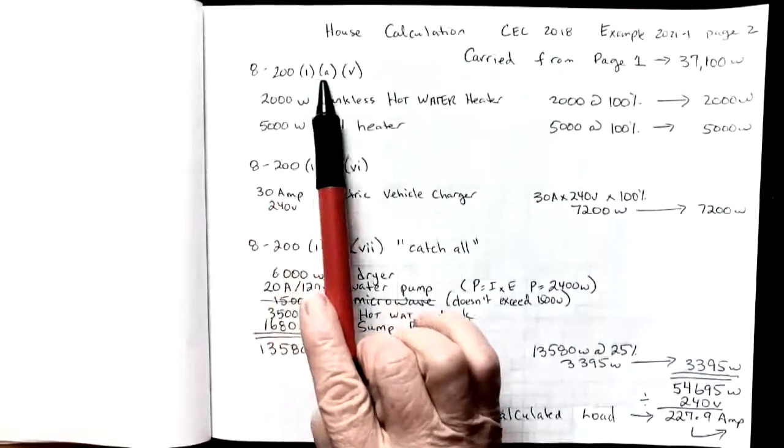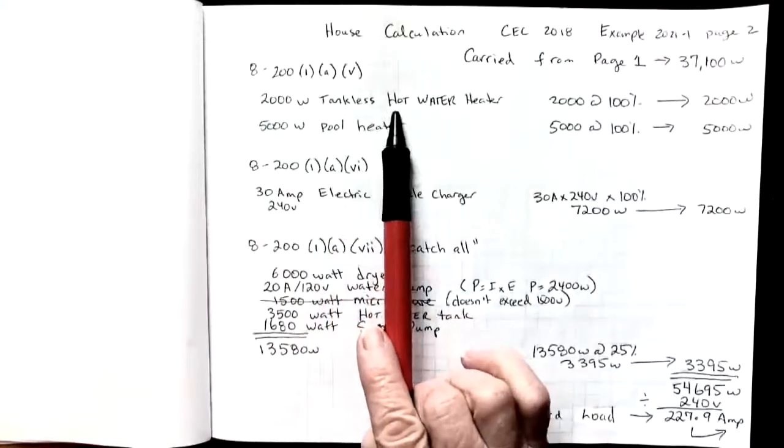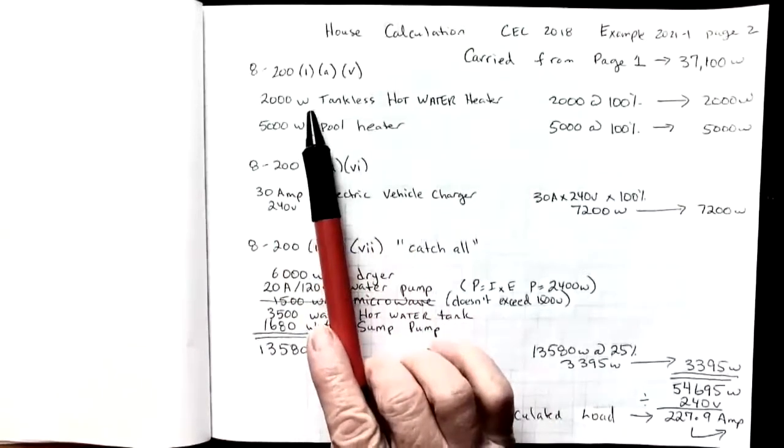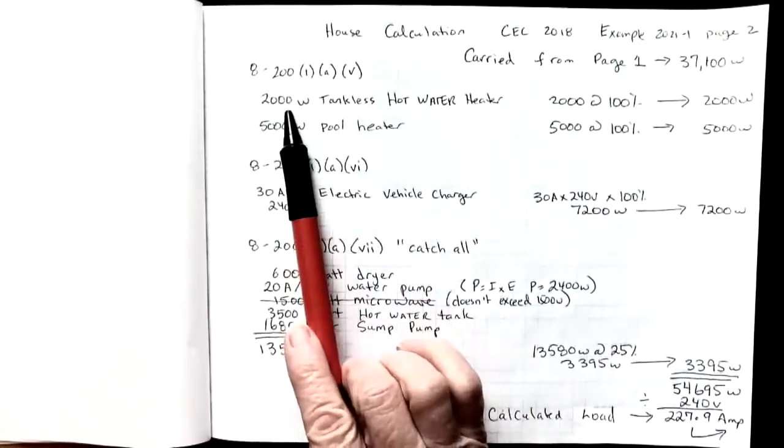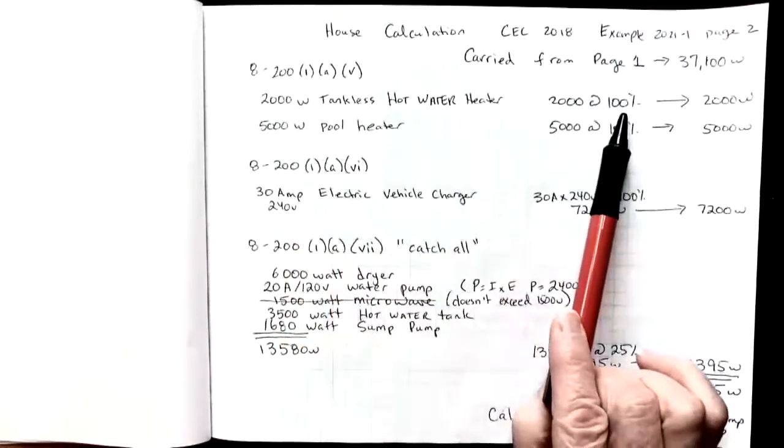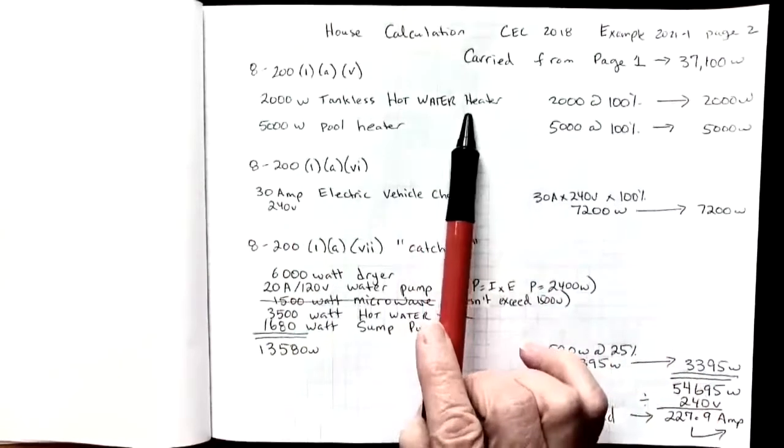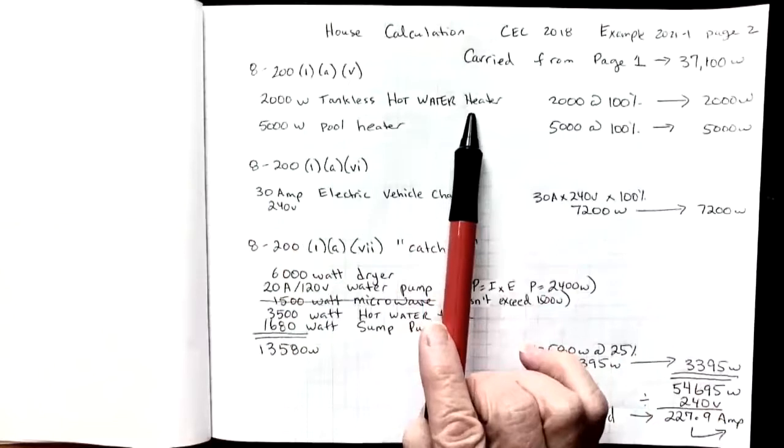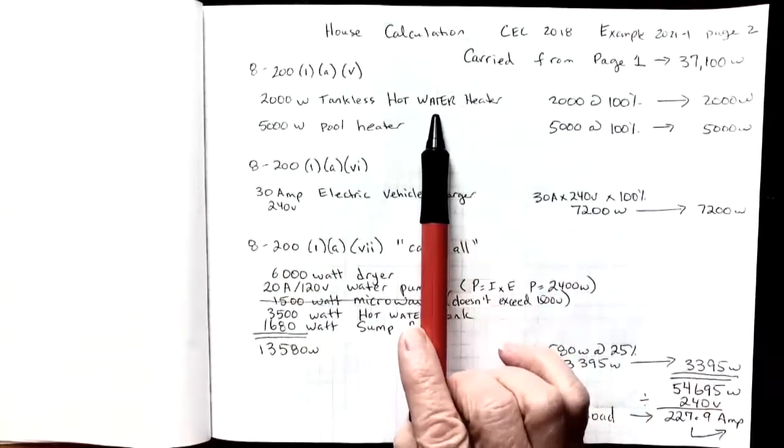Rule 8-200(1)(a)(5) speaks about a couple things that we have in this house. One is a tankless hot water heater, 2,000 watts, and we're going to take that at 100%. Remember a tankless hot water heater, even if it was under 1,500 watts, it would still fall in this rule and not in the catch-all rule, so we'd take it at 100%.